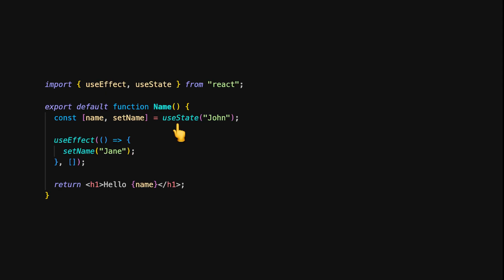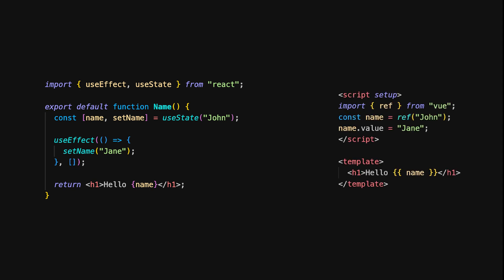To update state in React, you'd typically use the useState hook along with the useEffect hook to update state after the component mounts. In Vue, the update is even more straightforward. After declaring name as a ref, we simply assign a new value to name directly. Vue's reactivity system automatically tracks this change and updates the DOM accordingly, whereas Vue's reactivity makes it easy to update state directly within your setup script.